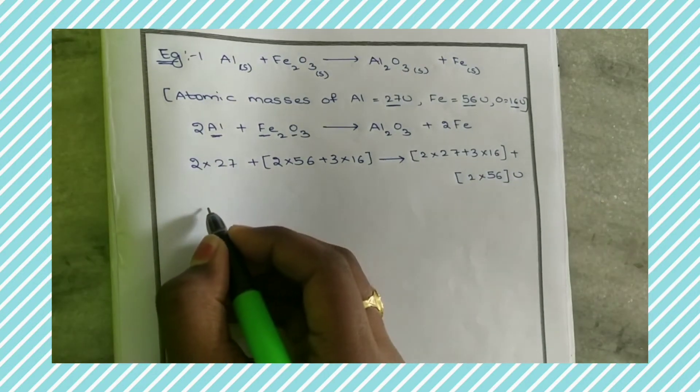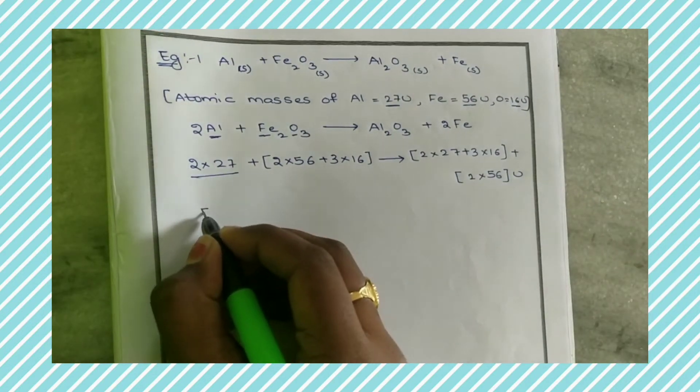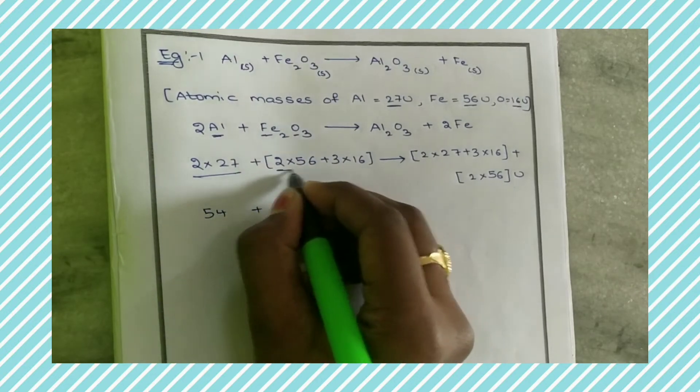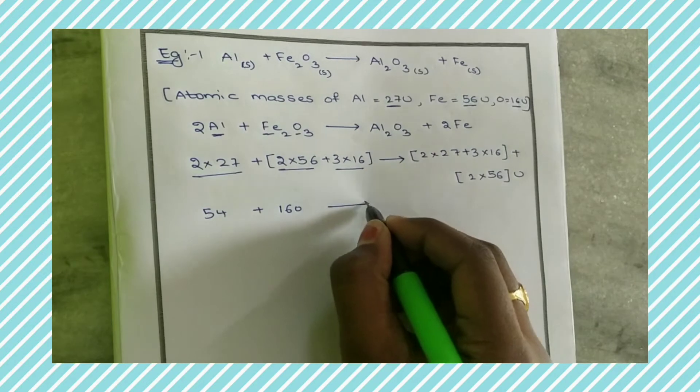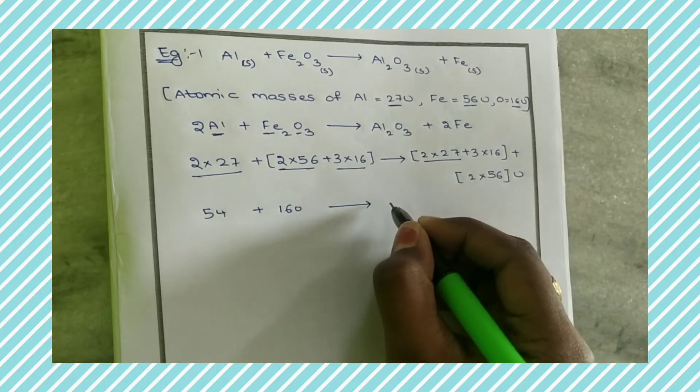That is 54 plus 160 gives rise to 102 plus 112.